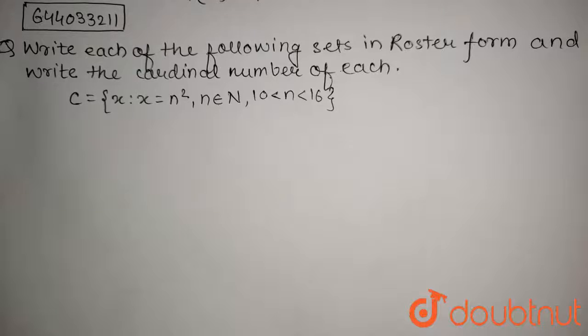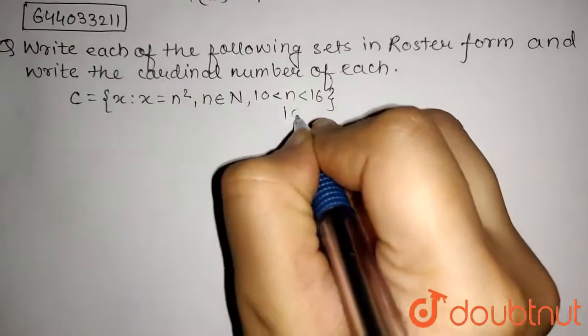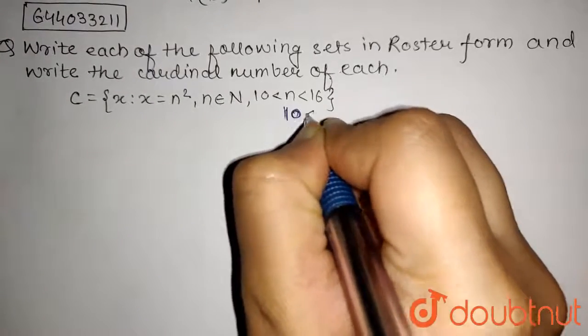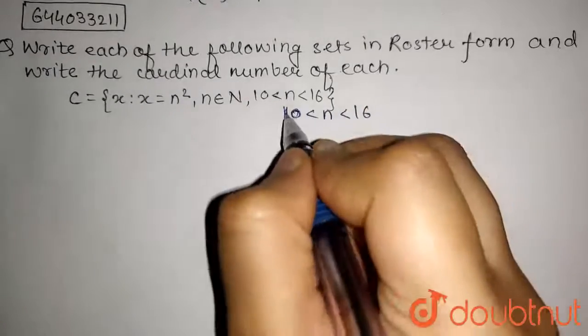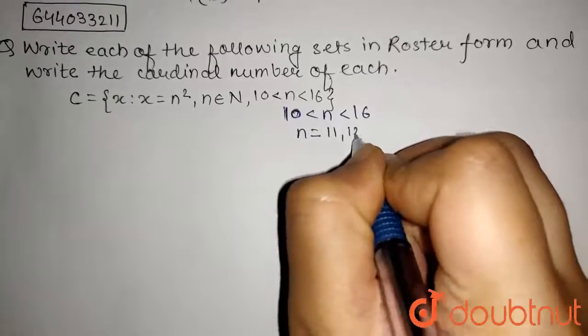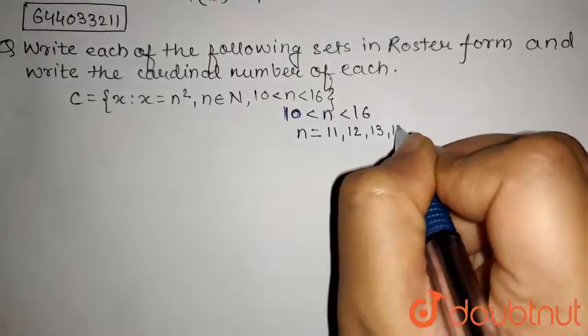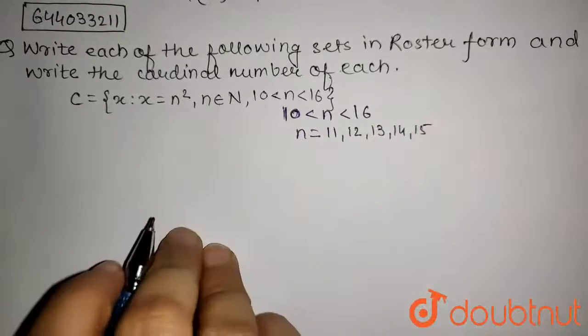Now let's proceed to the solution. As we have in this question that n is between 10 and 16, so the values n can take is equals to 11, 12, 13, 14, and 15. 10 and 16 will not be included.